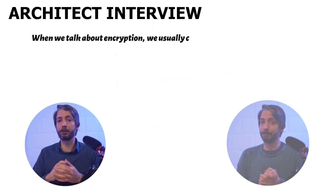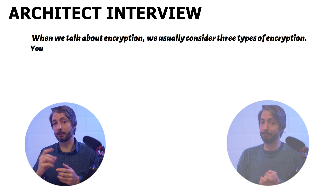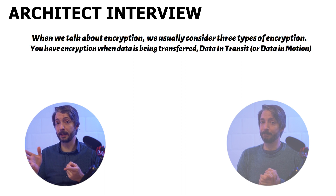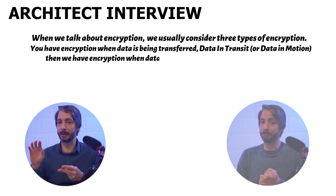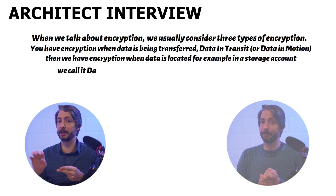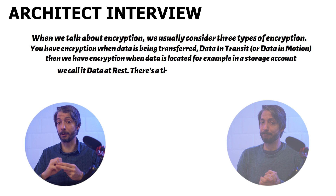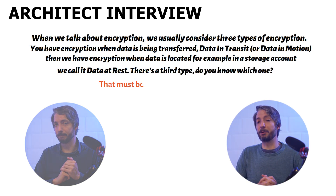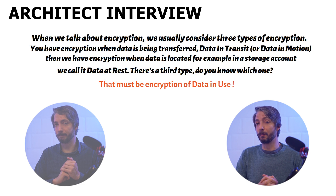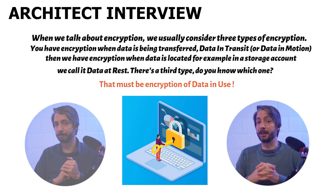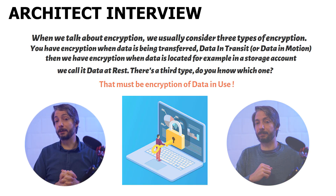When we talk about encryption, we usually consider three types. You have encryption when data is being transferred — we call that data in transit or data in motion. Then we have encryption when data is stored in a place, for example in a storage account — we call this data at rest. There's a third type. Do you know which one? That must be encryption of data in use. The Azure public cloud is focusing heavily on ensuring that data in use is being encrypted.